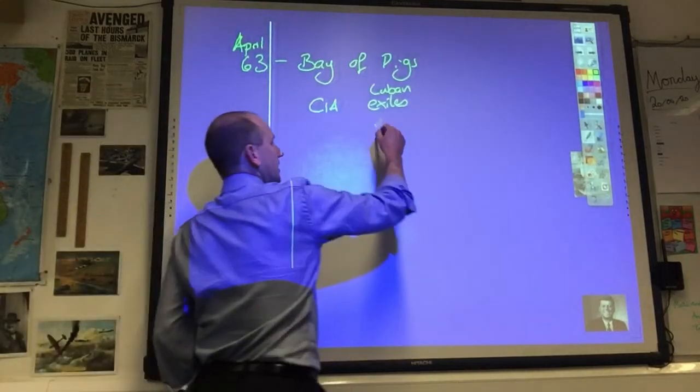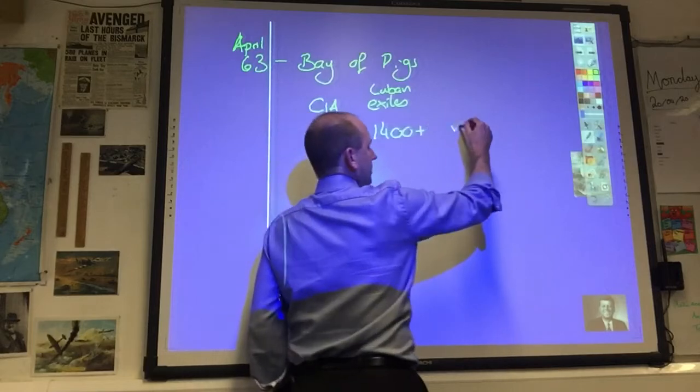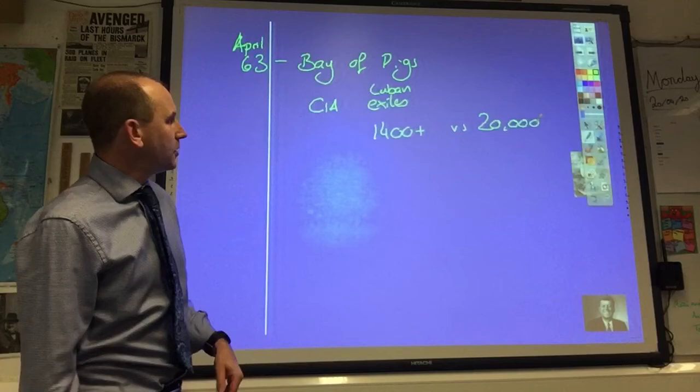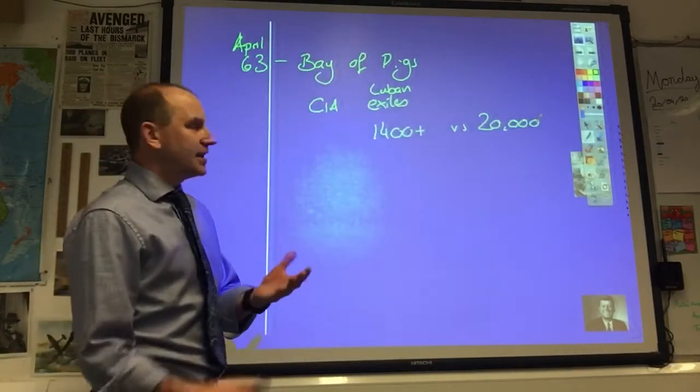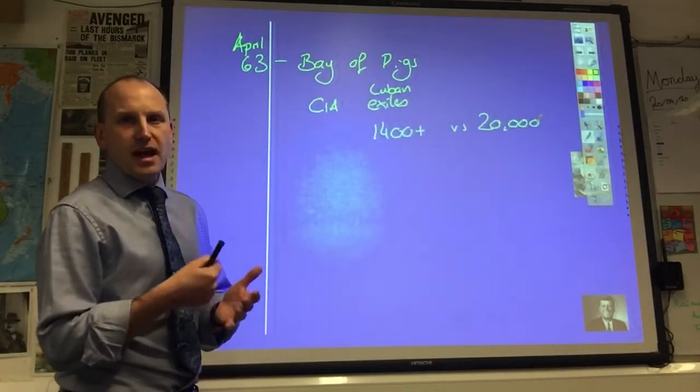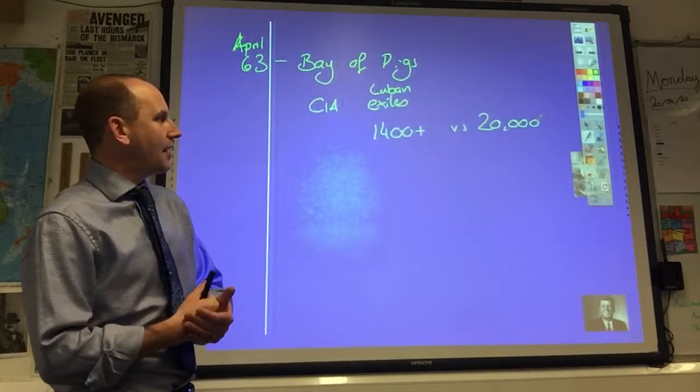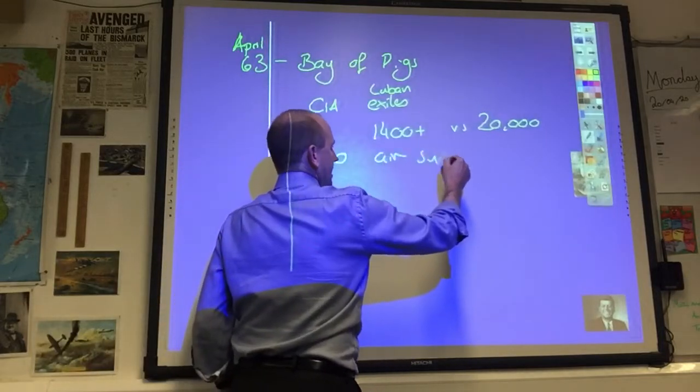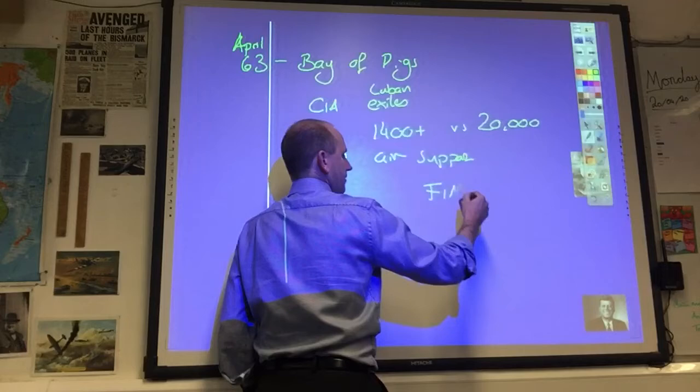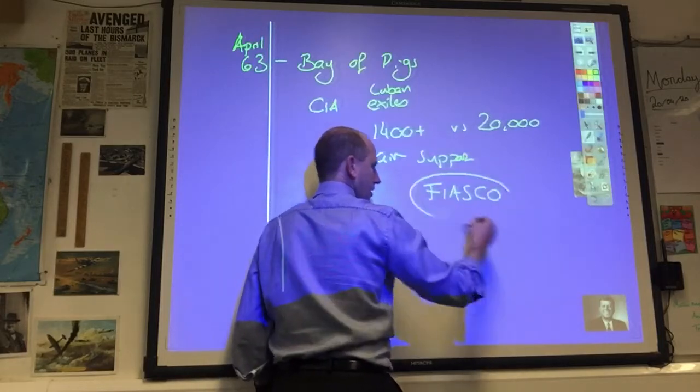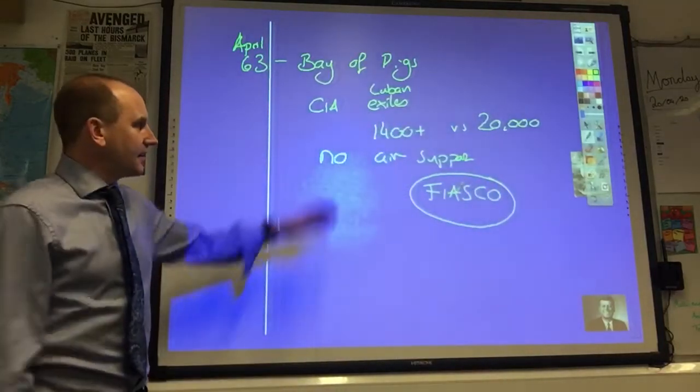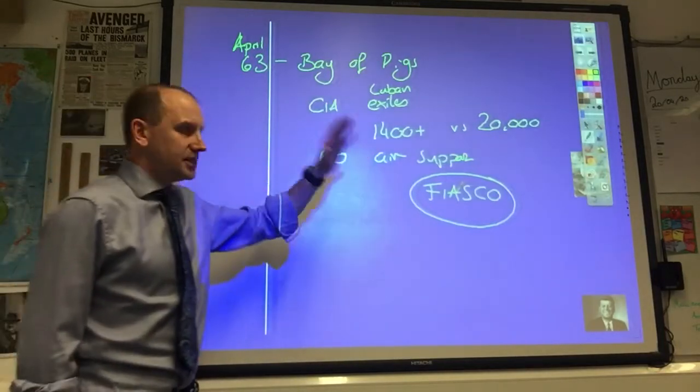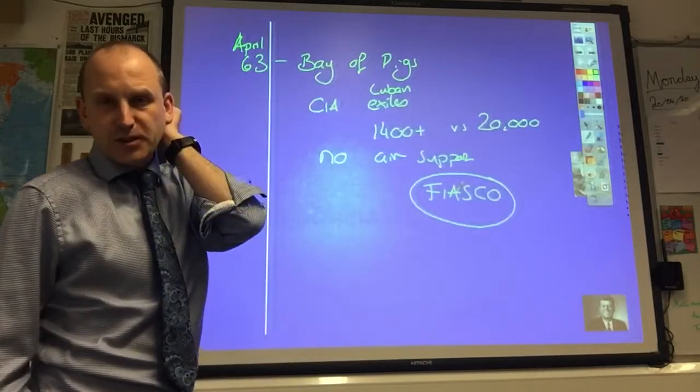There are over 1,400 of them. They are met by the full force of the Cuban military. Over 20,000 Cubans rally to meet them on the beaches. And crucially, at the final hour, Kennedy calls off American air support. He's worried about political fallout and how it will look in the eyes of the world. And it's a complete disaster. In fact, Kennedy calls it a fiasco. All of these Cubans are either captured or killed, and most of them never get off the beaches. It's an inauspicious start to Kennedy's career.